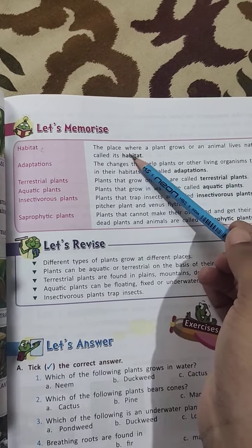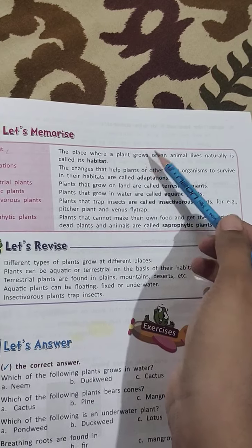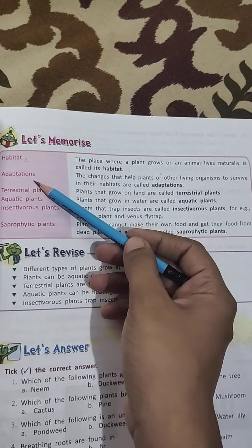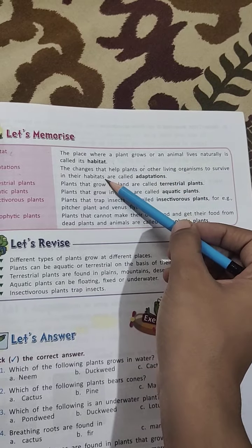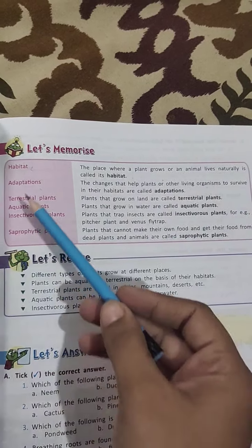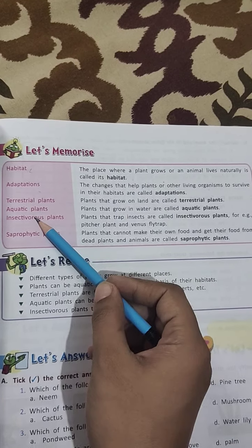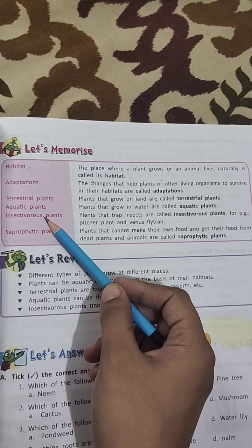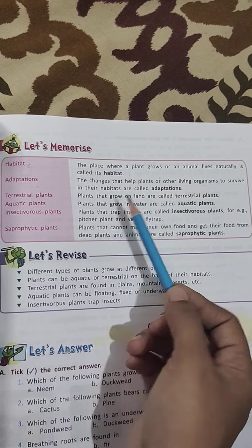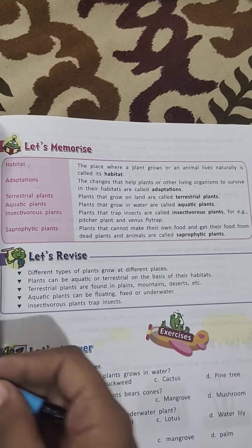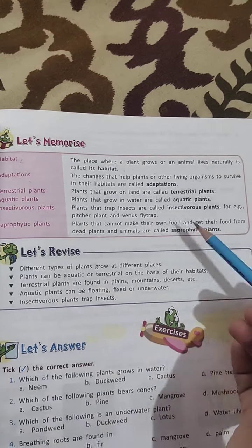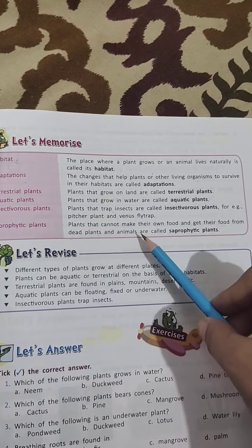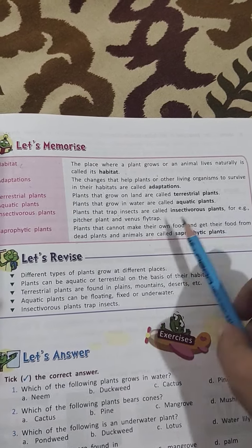Let's memorize the key definitions. Habitat: the place where a plant grows or an animal lives naturally is called its habitat. Adaptations: the changes that help plants or other living organisms to survive in their habitats are called adaptations. Terrestrial plants grow on land; aquatic plants grow in water. Insectivorous plants trap insects — examples: Venus flytrap and pitcher plant. Saprophytic plants cannot make their own food and get it from dead plants and animals.